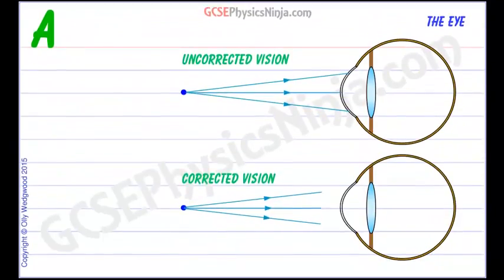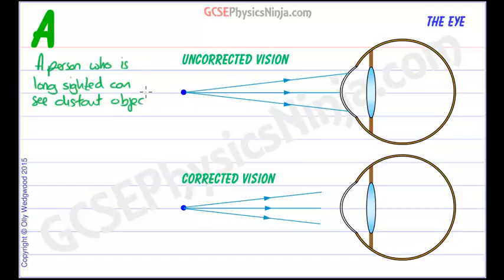So first of all let's start off by just defining what long sight is. A person who is long sighted can see distant objects clearly, but close objects appear out of focus.